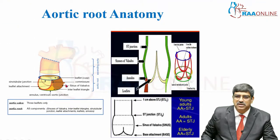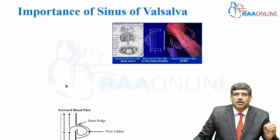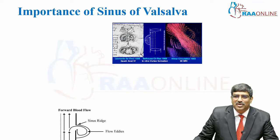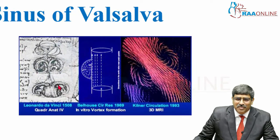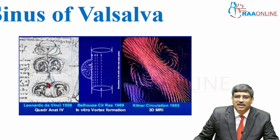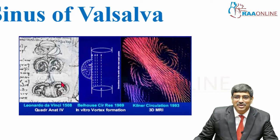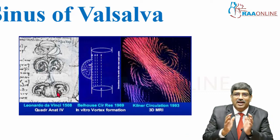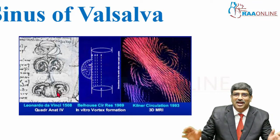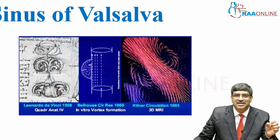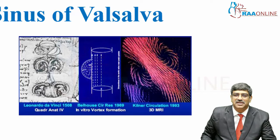Now let us look at the Sinus of Valsalva anatomy. What is so important about it? Here you can see a picture of the left ventricular outflow tract when blood comes out of the left ventricle. This was depicted way back in 1508 by Leonardo da Vinci in his notebook. He shows the resistance in the LV outflow tract and the vortex formation across it — these are things in which the Sinus of Valsalva plays a great role.